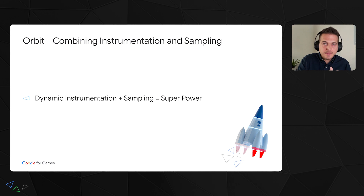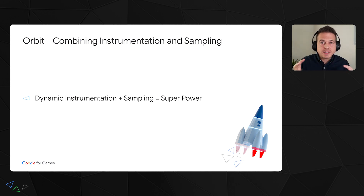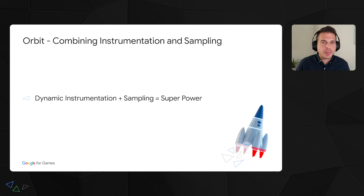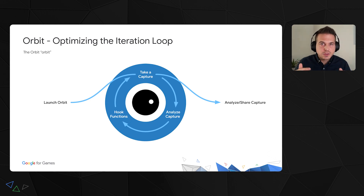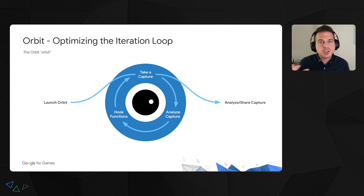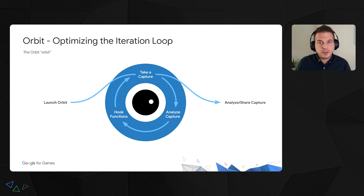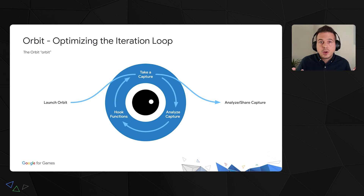Dynamic instrumentation on its own is great, and so is sampling. When you combine both, you get something worth more than the sum of its parts — it unlocks a workflow that makes iteration incredibly quick, and this combination is Orbit's core value proposition. A good way to understand this is by putting ourselves in the shoes of someone who knows nothing about the binary they want to profile. We start by taking a capture without any dynamic instrumentation, analyze the sampling report to identify interesting functions to instrument, hook those functions, and take a new capture. Very quickly we'll populate flame charts for the different threads — all without having touched a single line of code.